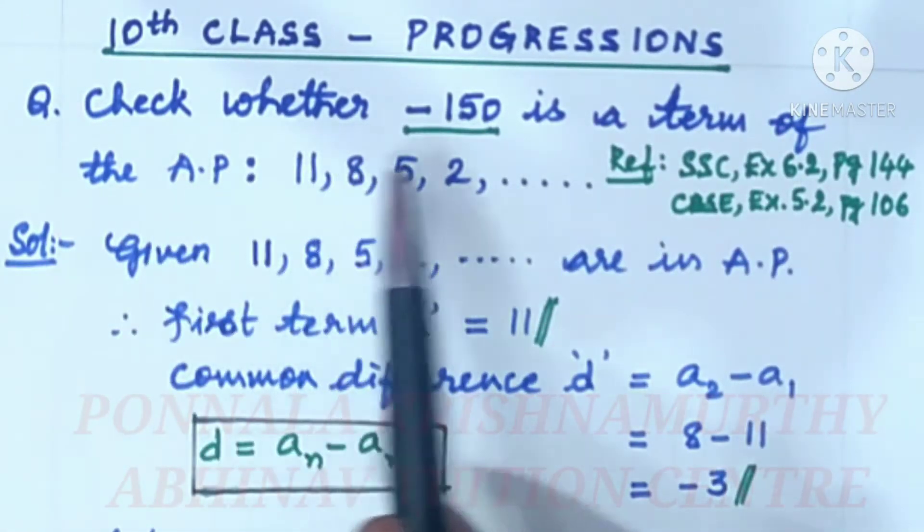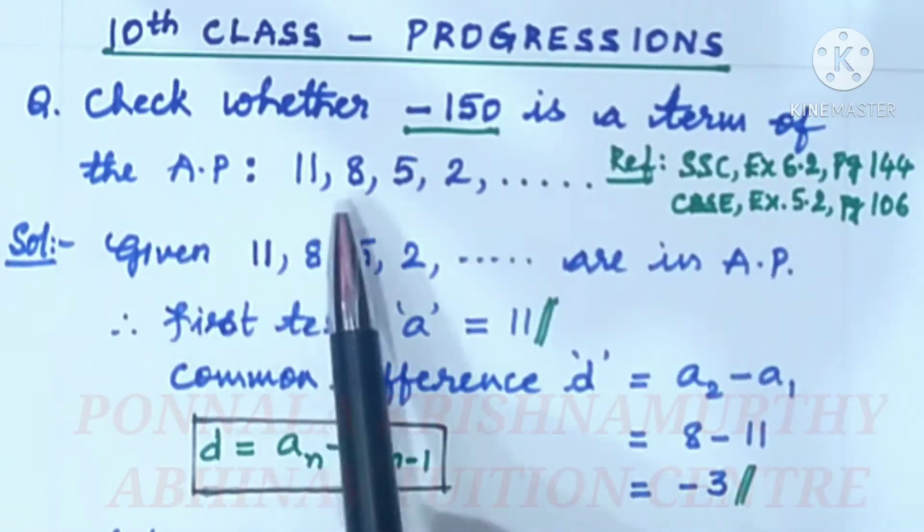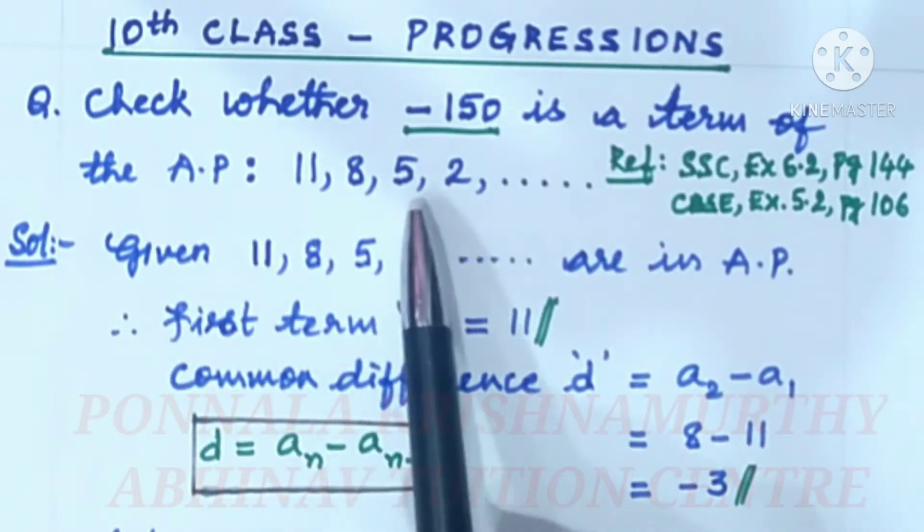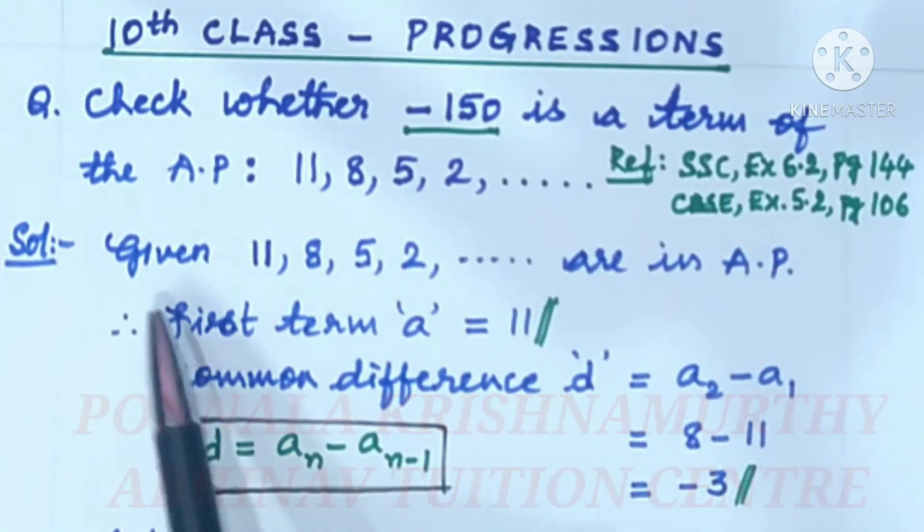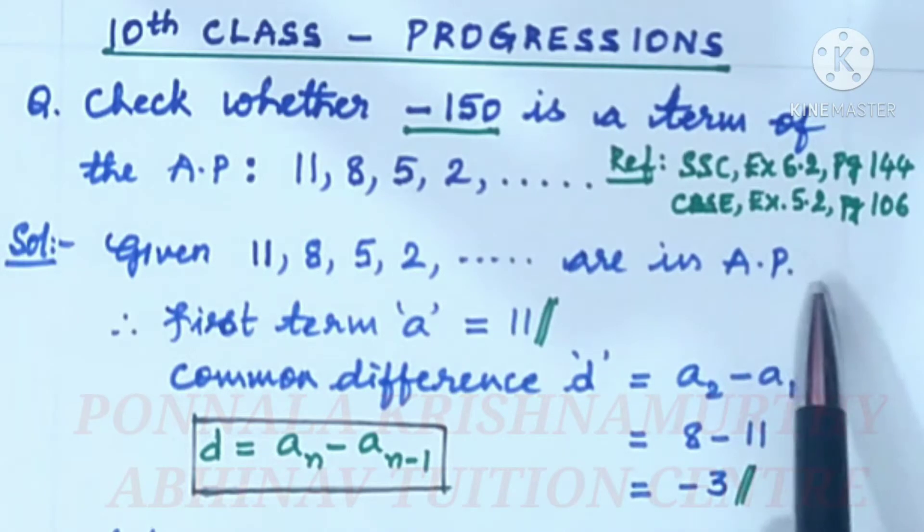Check whether minus 150 is a term of the AP: 11, 8, 5, 2 and so on. References here, given 11, 8, 5, 2 are in AP.